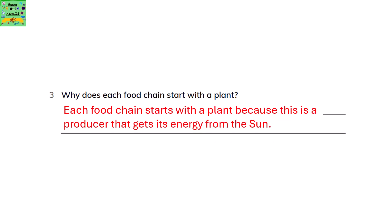Why does each food chain start with a plant? Each food chain starts with a plant because it is a producer that gets its energy from the sun.